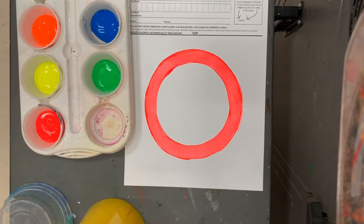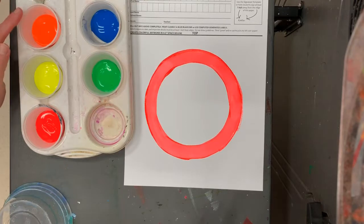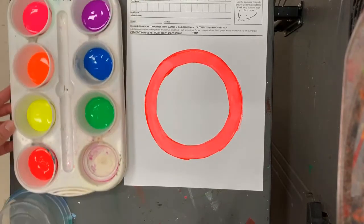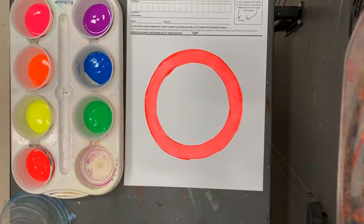Now, if I put green next to this, red and green are complementary colors. They don't play well together. I can put pink, orange, yellow, purple, and blue. Every other color except green next to it, and it's going to be fine.